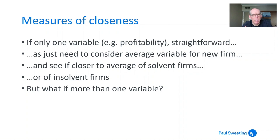Now if you've only got one measure that you're looking at, say profitability, it's straightforward. You just need to consider the average profitability of the new firm and see if it's close to the average profitability of solvent firms or insolvent firms. If that's all there was to it, it would be a very short video indeed, but it's a little bit more complicated because you're often looking at more than one variable. If you do have more than one variable, how do you deal with this? What does closest mean in that context?